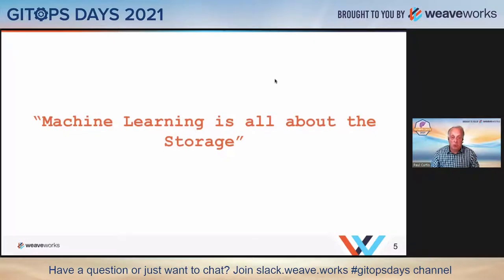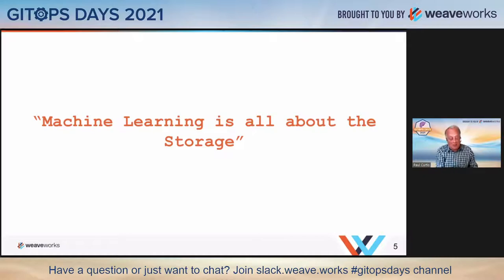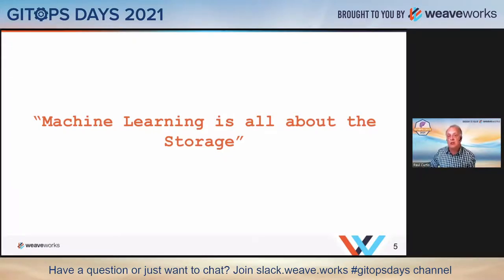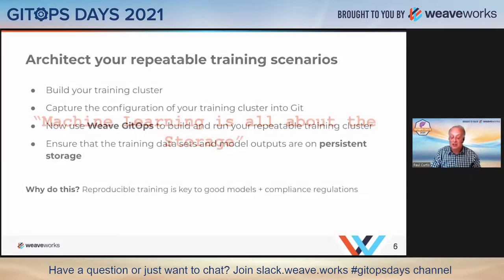One fact to walk away from this talk with: machine learning is all about storage. You have to be able to manage large datasets, models, parameter lists, features, and code — and do all of this consistently. The version of the data that I trained this version of the model with came from this code, this set of features, and these parameters. Git is a really nice way to version almost all of that, but not quite all of it. Storage is one of the key things we'll hit on.